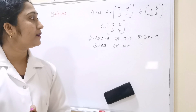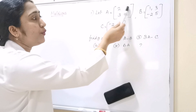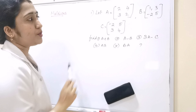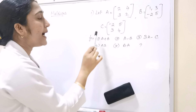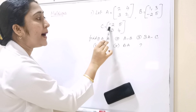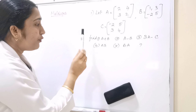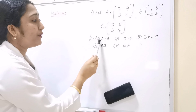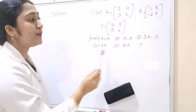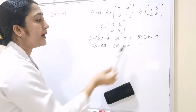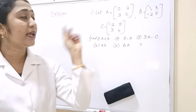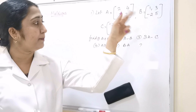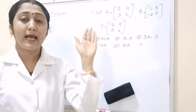Here one problem is given. Let A equal to [2, 4; 3, 2], B equal to [1, 3; -2, 5], and C equal to [-2, 5; 3, 4]. We have to find: first A plus B, A minus B, 3A minus C, AB, and BA. Here three matrices are given, that is A, B, C. We have to find these one by one.